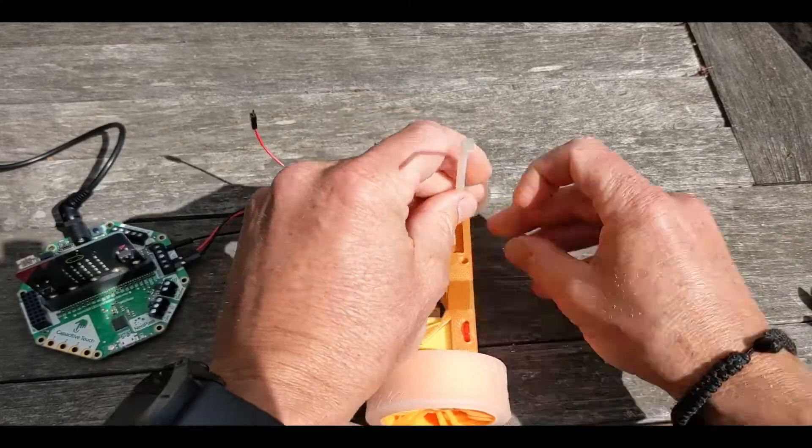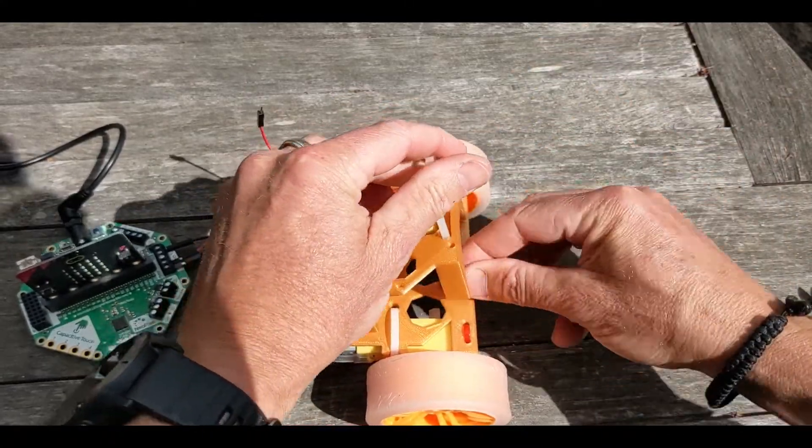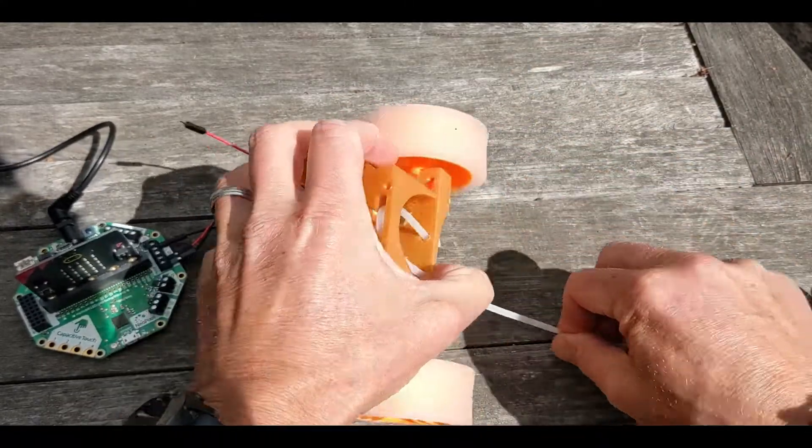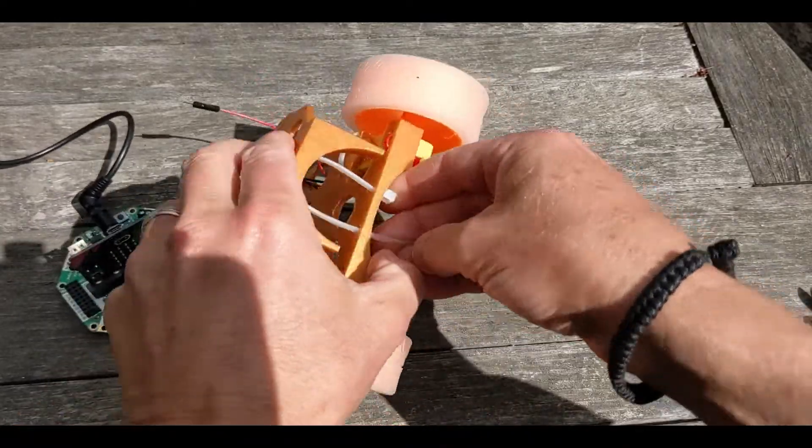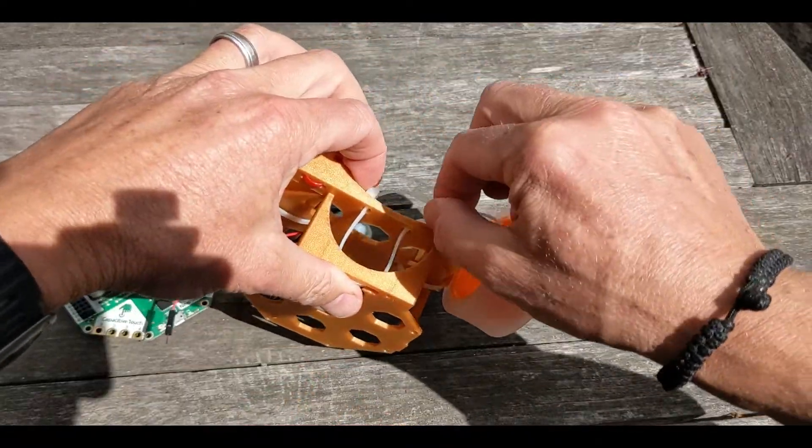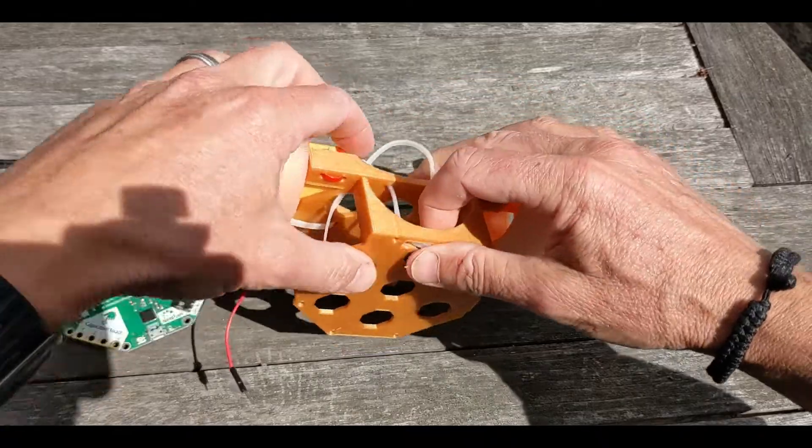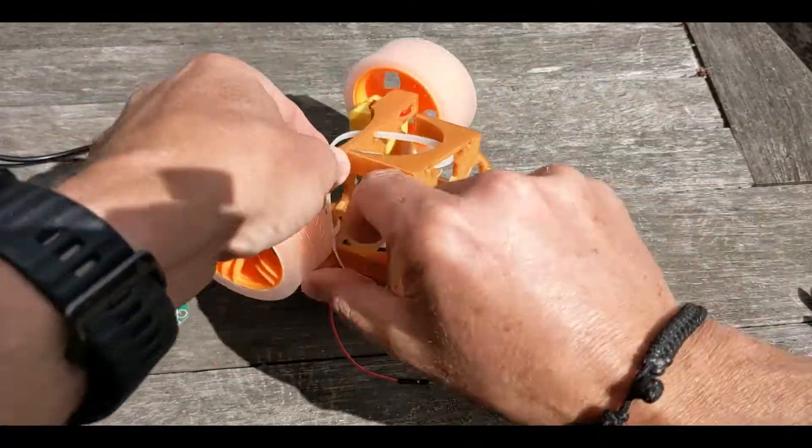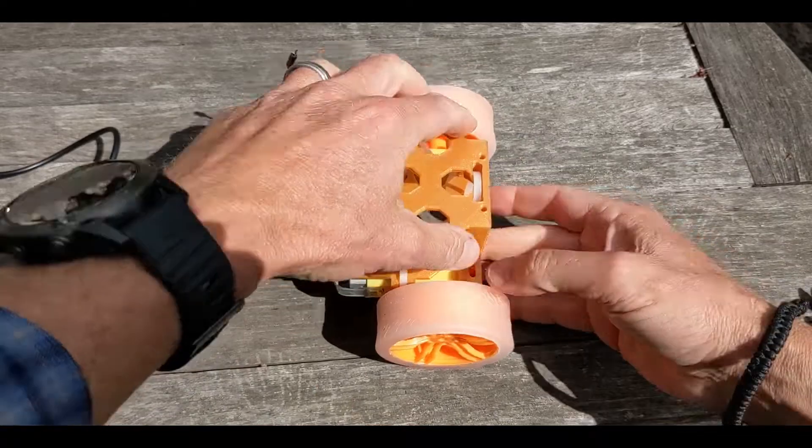Then I'm threading a large zip tie up through the front and securing it in the bottom, but I won't overtighten it. I'm just going to snug it down enough so it's secure without overdoing it.